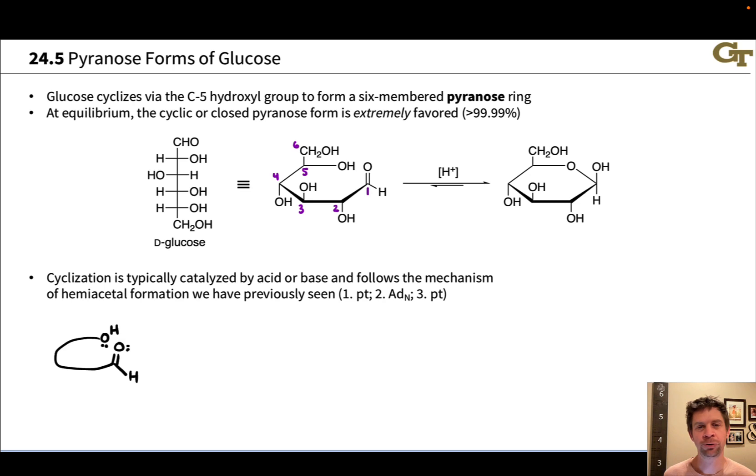So we've seen here that glucose can cyclize to form a cyclic hemiacetal. This is typically the highly favored form of the sugar to the tune of greater than 99.99% cyclic or closed form at equilibrium. And here we're going to focus on the so-called pyranose forms, which are characterized by a six-membered ring.